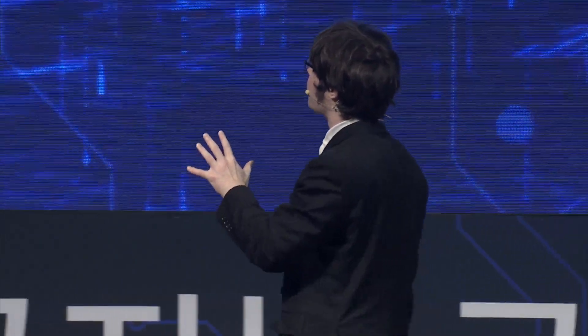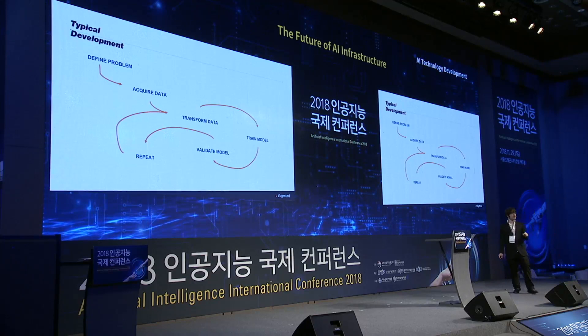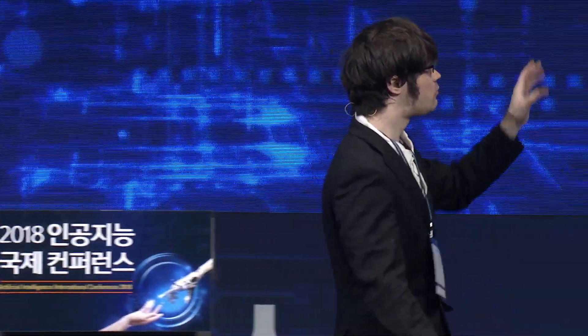Here's the typical development lifecycle for machine learning. First, you define the problem — the first question you should actually ask is: should I use machine learning? Do I need this at all? Then you acquire data, which might take three months depending on your company's bureaucracy. You transform the data, train the model, validate it, and rinse and repeat. We do this to put models into production and actually get them used by the company for real value.